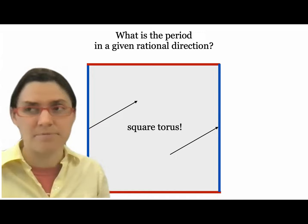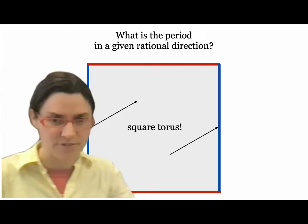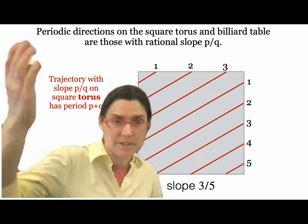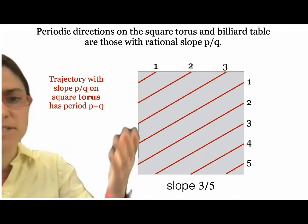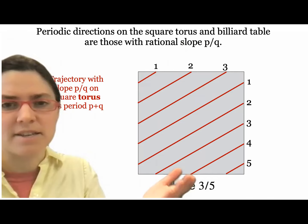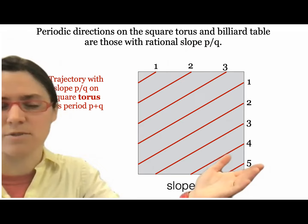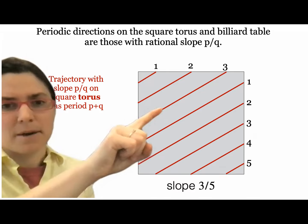Our question: what's the period in a given rational direction? For example, if I hit my ball in direction 4/5 or 5/4, how many bounces will it make before it repeats? Periodic directions on the square torus are those with rational slope p over q. A slope of 3 over 5 means it rises 3 times and runs 5 times, hitting the top and side of the square torus 3 and 5 times respectively.